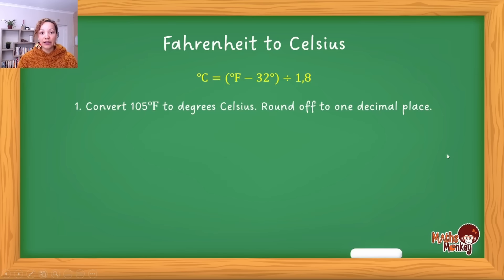Let's do an example converting Fahrenheit to degrees Celsius. The question says: convert 105°F to degrees Celsius, round off to one decimal place. These are simplistic questions because I want to teach you the method, but in an exam they'll probably give you an entire scenario. They can either give you the Celsius formula or the Fahrenheit formula.